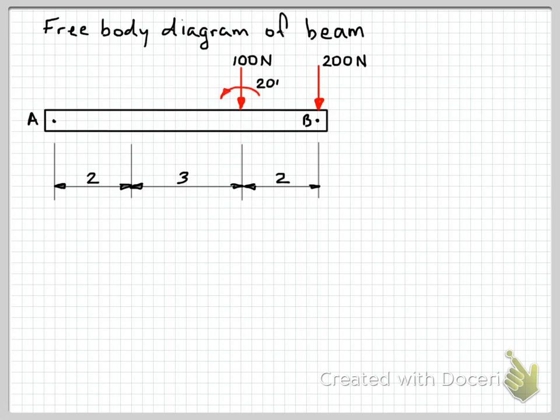And a 100 newton force acting 2 metres from end B. There's also a couple moment applied there — a few hundred newton metres. And we've got a force 2 metres from end A which is 600 newtons at 45 degrees. We also take note that we've been given the distance between where that load is applied and the centre line of the beam, so we've included that dimension in our free body diagram because that will be important when we're calculating moments.